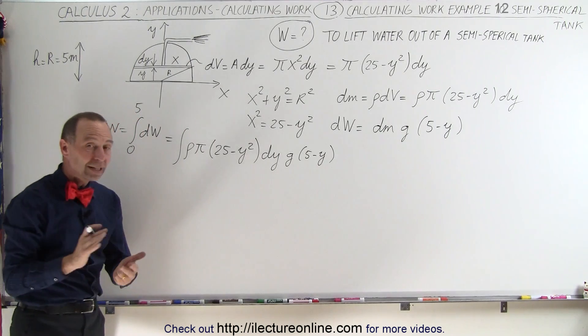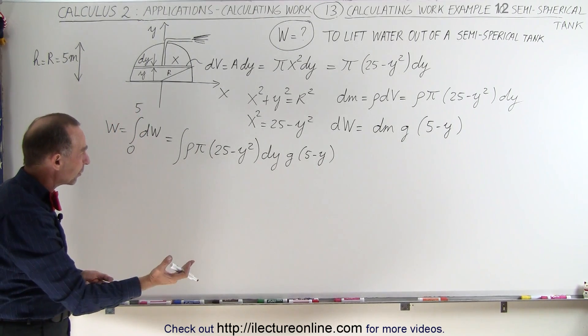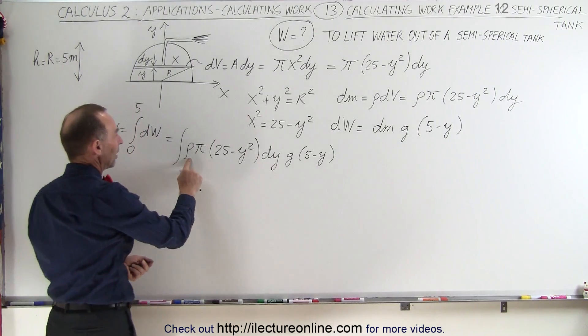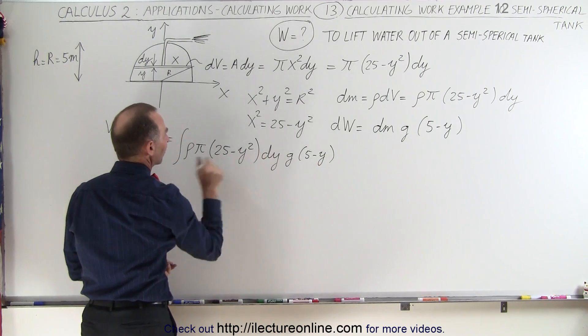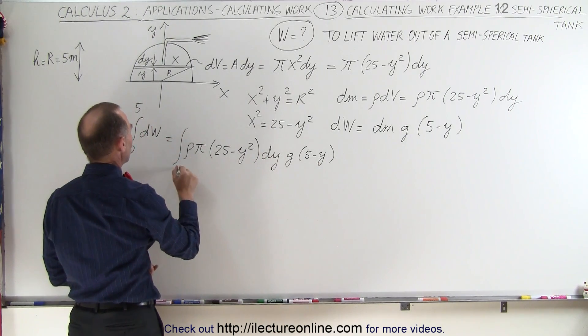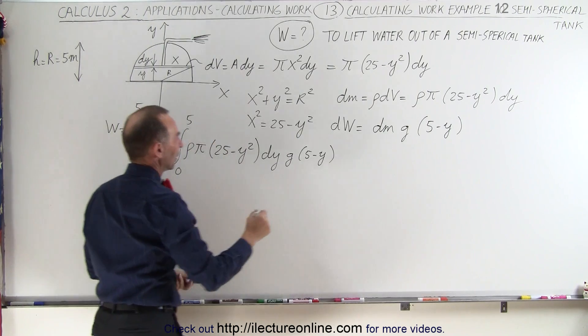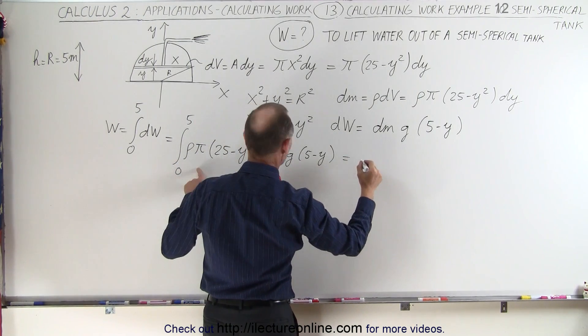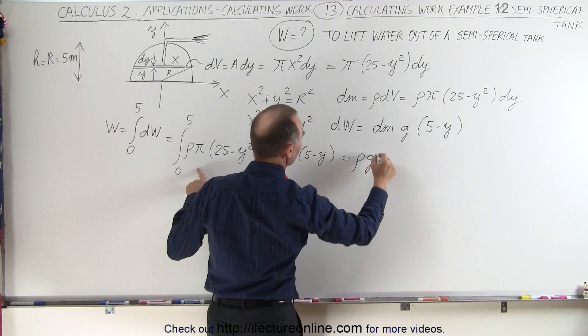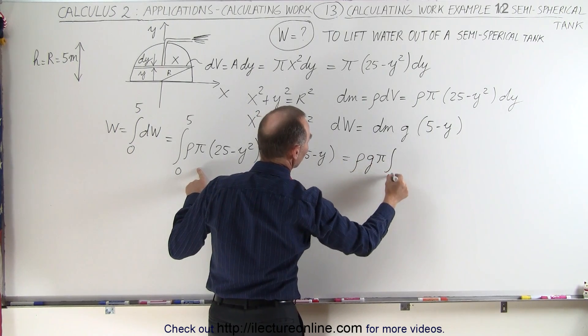We have everything now we need to integrate, but we probably want to pull out all the constants: the density, π and g, and then multiply this times this. And the limits would be from 0 to 5. So this would be equal to density times g times π times the integral from 0 to 5.